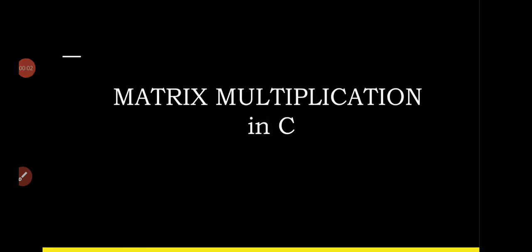Hello everyone. In this video we are going to see about the program for matrix multiplication in C. We know that multiplication of a matrix is possible when the number of columns of the first matrix is equal to the number of rows of the second matrix. That is the basic rule for matrix multiplication. So let us see the program.